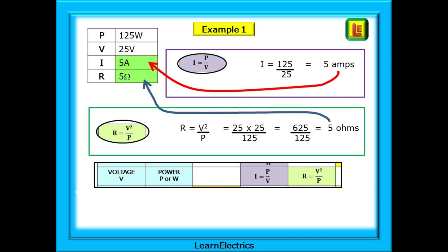Using the formula I equals P divided by V, we have 125 watts divided by 25 volts, and our answer should be 5 amps. The second part of the question asks us to find the resistance. V squared over P is the calculation to use. V squared is just V times V. V is 25 volts, and P is 125 watts. So we have 25 times 25 divided by 125. That's 625 divided by 125, and an answer of 5 ohms.